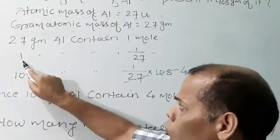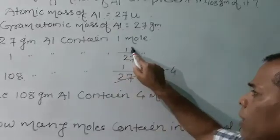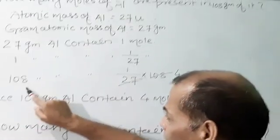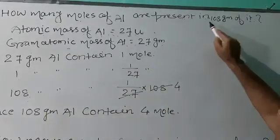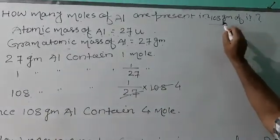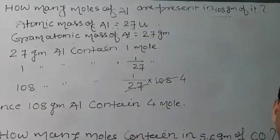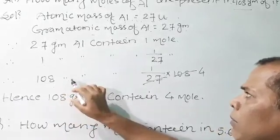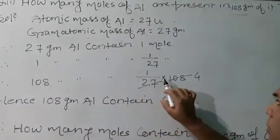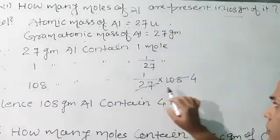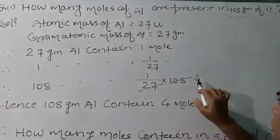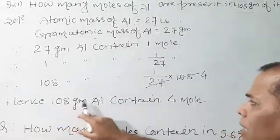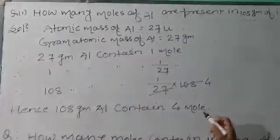Therefore, 1 gram of aluminium contains 1 by 27 mole. In the question it is given: how many moles are present in 108 grams of aluminium? So, 108 grams aluminium contains 1 by 27 into 108, which equals 4. Hence, 108 grams of aluminium contains 4 moles.